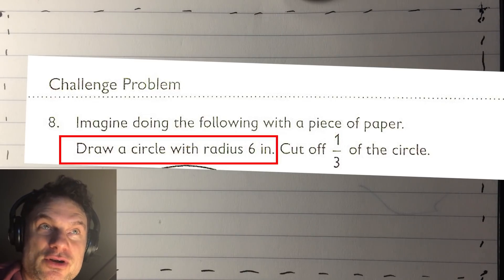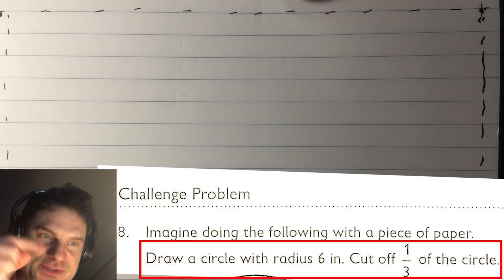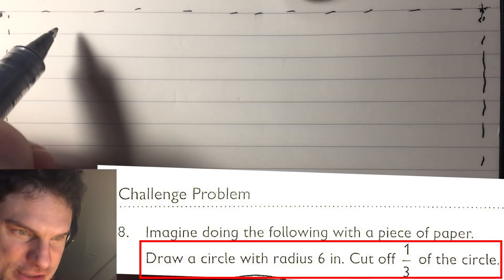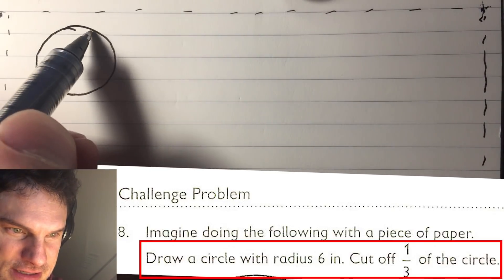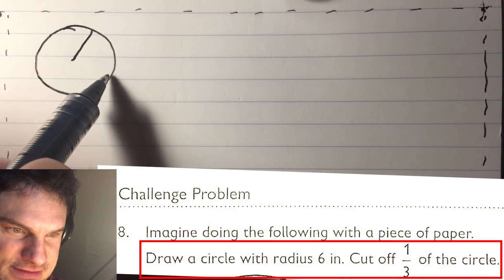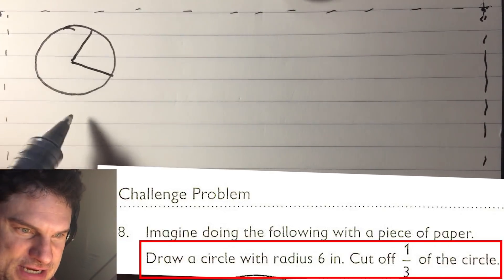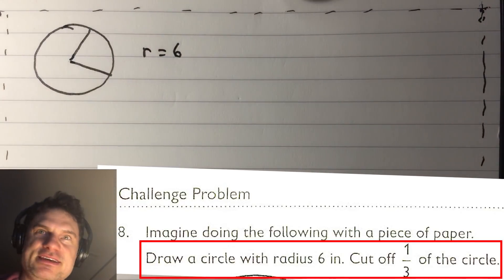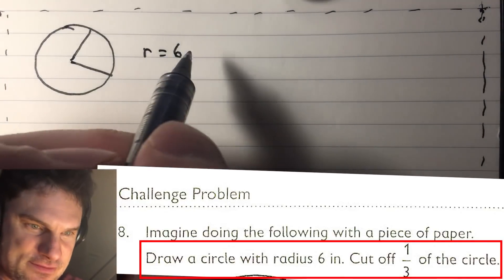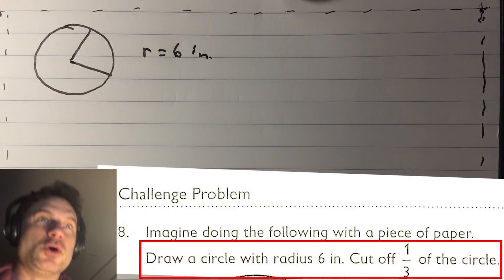We draw a circle with radius six inches and cut off one third of the circle. You see it, but I will draw it here as well. Snippy-dippy-bingy-bunky. And so we have like this — snip. Okay, and then we know the radius r equals six. We will say inches. So we have it with a dotty.